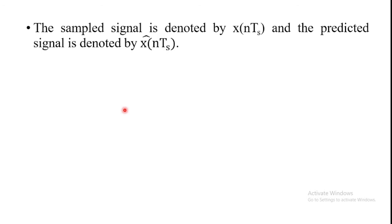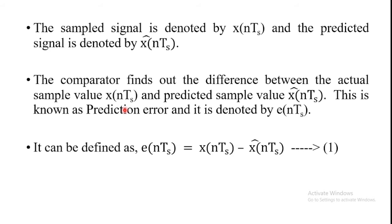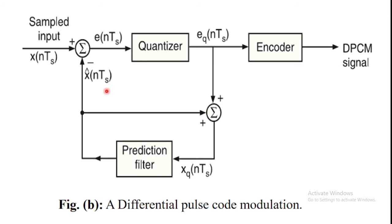This is the difference between the unquantized input sample X(nTs) and the prediction of the sample X̂(nTs). The predicted value X̂(nTs) is produced by using a prediction filter.